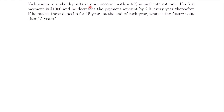For our next example, Nick wants to make deposits into an account with a 4% annual interest rate. His first payment is $1,000 and he decreases the payment amount by 2% every year thereafter. If he makes these deposits for 15 years at the end of each year, what is the future value after 15 years? We have another geometric annuity — the payments are changing by a certain percent every year — so we can apply the same process.